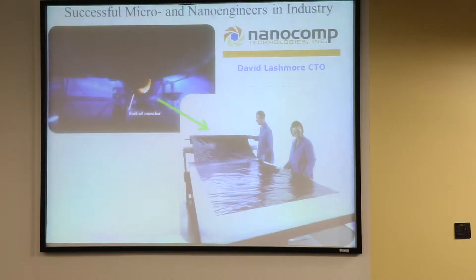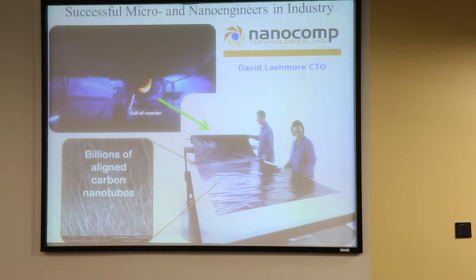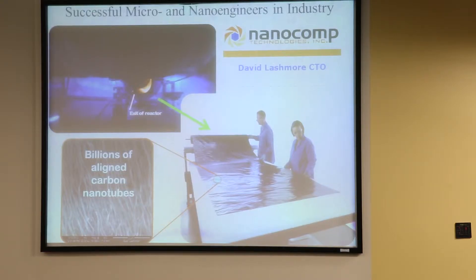One example of taking something very small that has different properties and scaling it up very large is the company Nanocomp, which makes large sheets of carbon nanotubes. At a small scale, you can see a micrograph of the little tubes, which have very special properties. That behavior can actually affect the sheet, so a sheet made of many tubes will have very special properties—properties that allow you to do things with it that no other natural material can do.